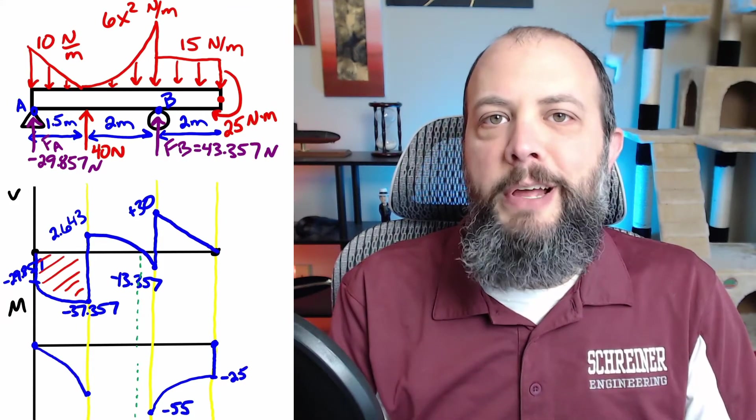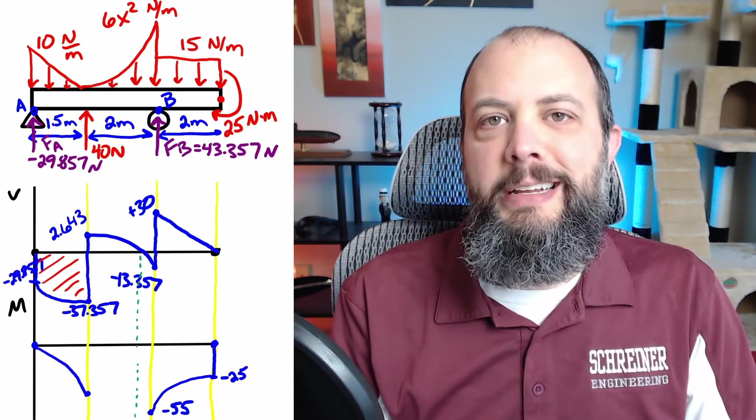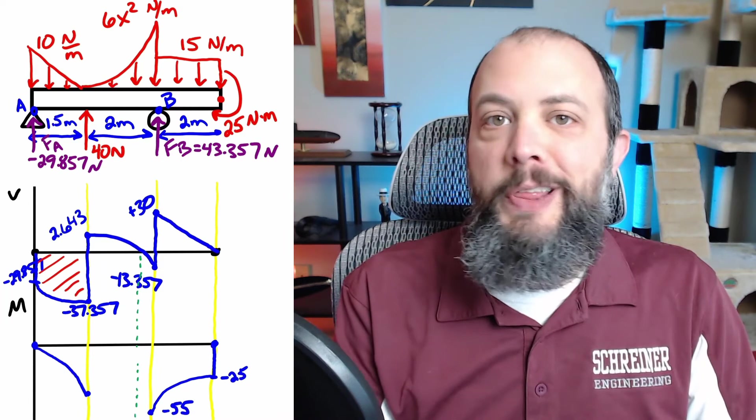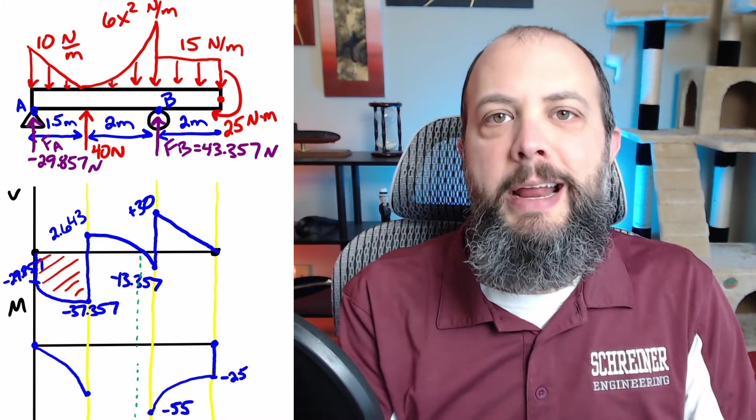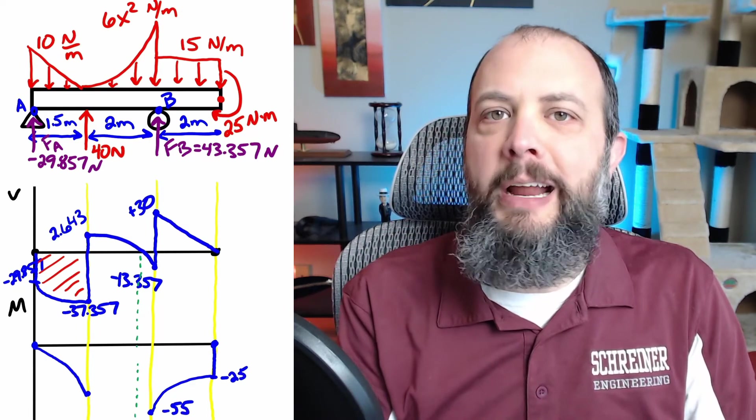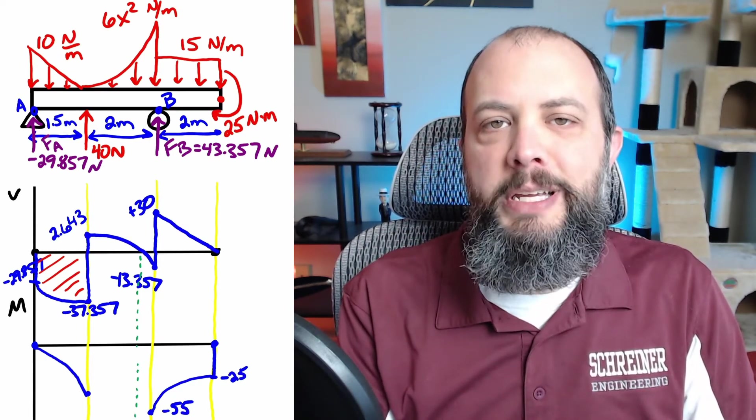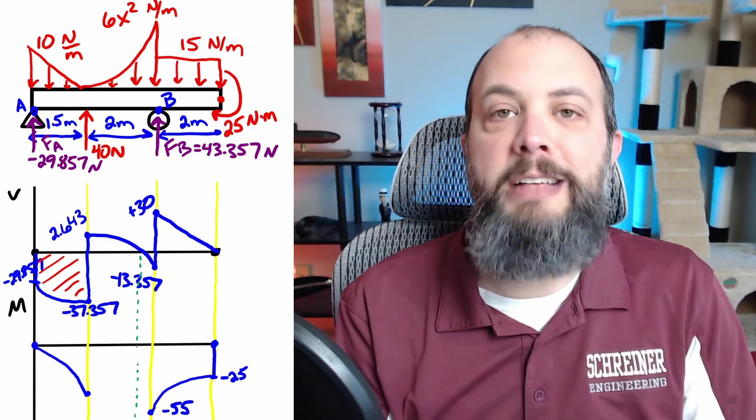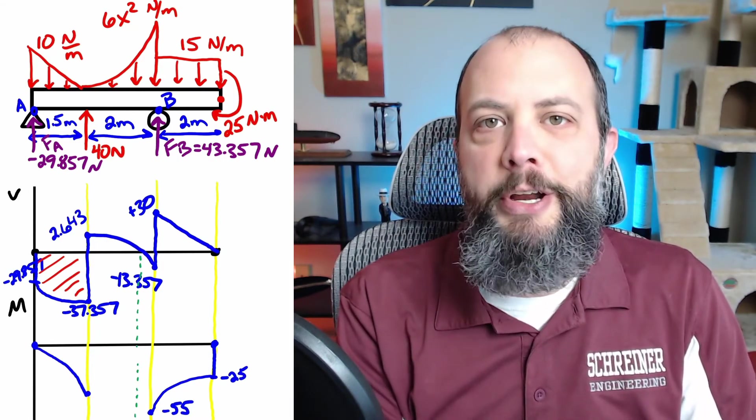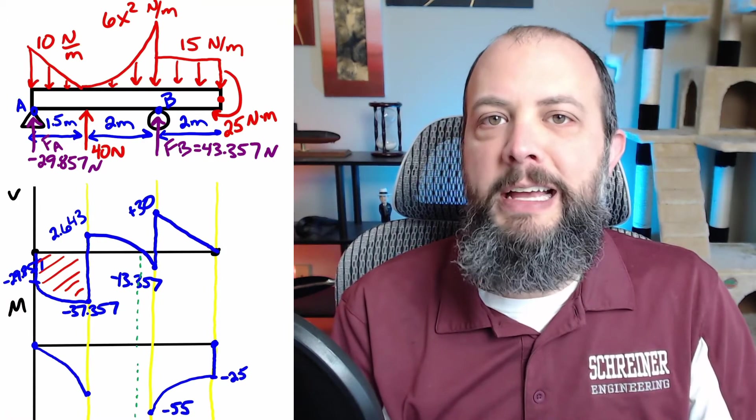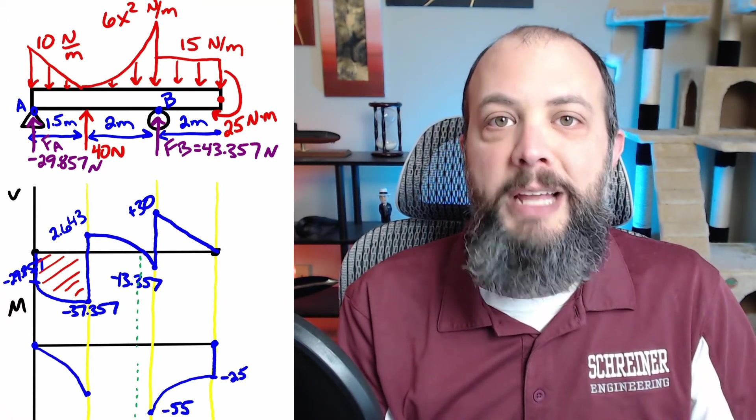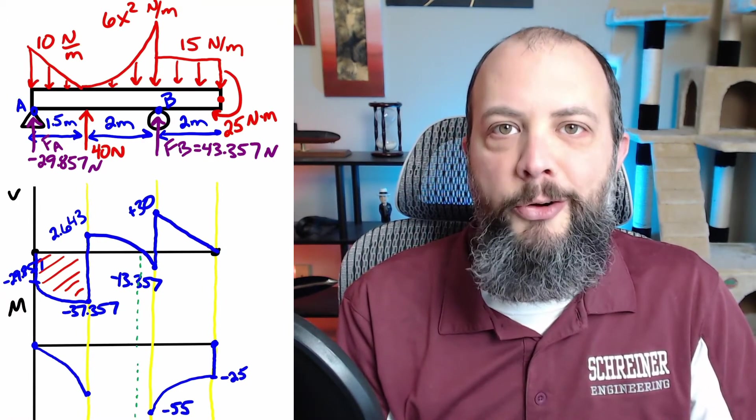So starting from the left, I need to find this red shaded area. I've already actually drawn the line on my moment diagram because I know it's going to be decreasing because that area is below the x-axis. And I know it's going to be concave down because the point on the right-hand side is lower, has a larger magnitude than the point on the left. So it means the right-hand side will be steeper. But to find the actual numerical value, I'll have to do some calculus to integrate to find that area.